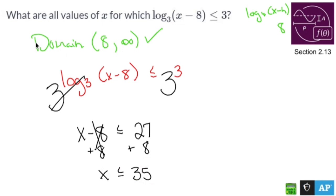So if my domain says that eight is the smallest number that I'm allowed to plug in and this guy here says that 35 including 35 is the largest number that I can plug in, then my x values are going to be everything in between eight not including eight and 35 but including 35.